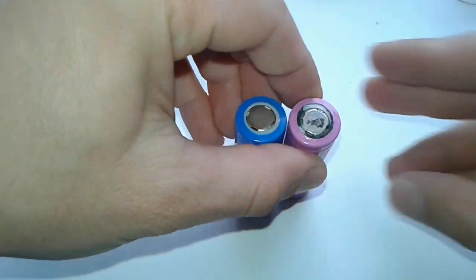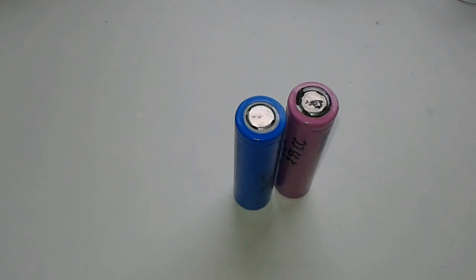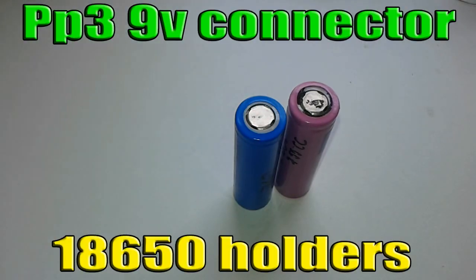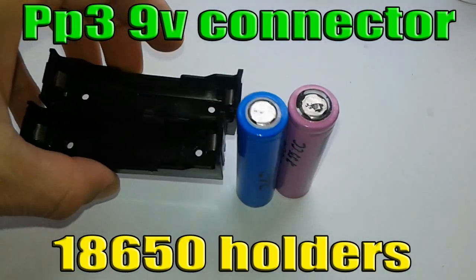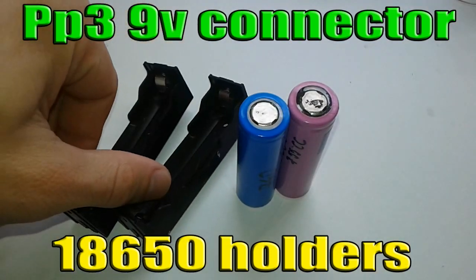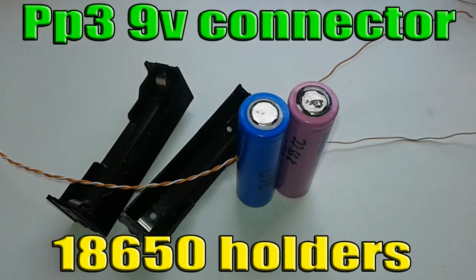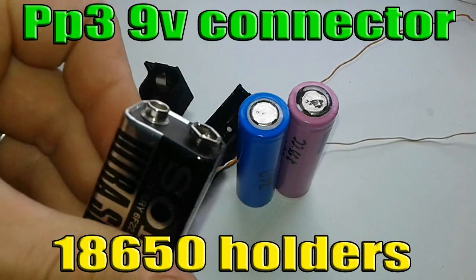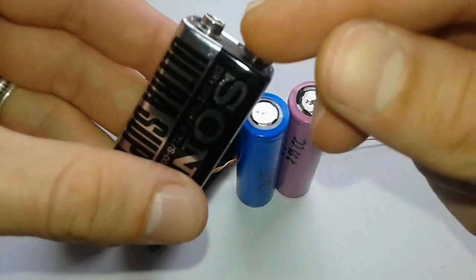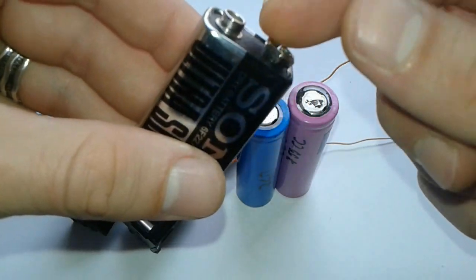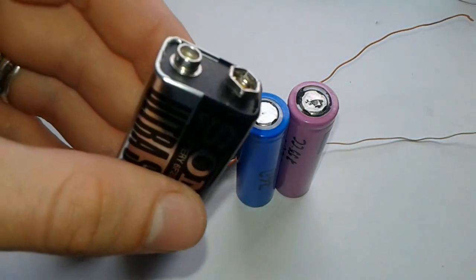The next thing we're going to need is some parts. We have the batteries already. Now we're going to need two battery holders like this one for single cells, as well as some wires, and we're going to use this old 9-volt battery to take off the special connector.